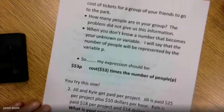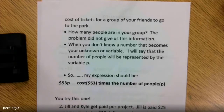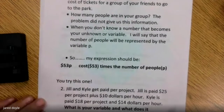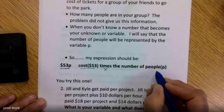Start asking yourself questions. How many people are in your group? The problem didn't give us that information. When you don't know a number, that becomes your unknown or variable. I say the number of people I will represent by variable P — I get to pick the letter since it didn't tell me which one to use. So my expression should be 53P: the cost times the number of people.